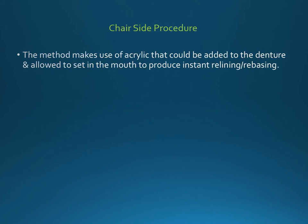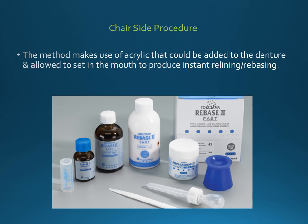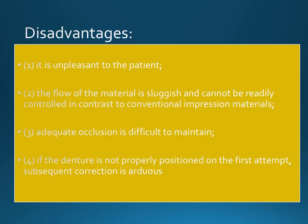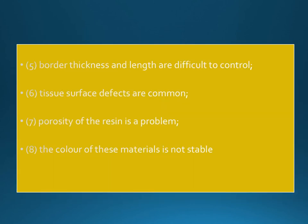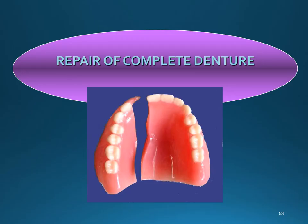The chairside procedure is the last method. It uses acrylic that is added to the denture and allowed to set in the mouth — an example is Rebase II. Disadvantages: it is unpleasant to the patient, the material flow is sluggish, occlusion is very difficult to maintain if not positioned properly, border thickness and length are difficult to control, tissue surface defects and porosities are common. In short, the chairside procedure does not work reliably.